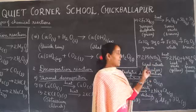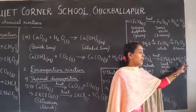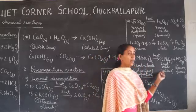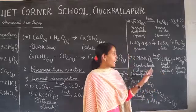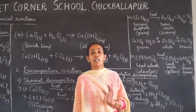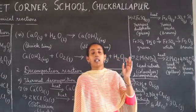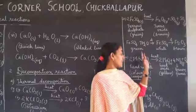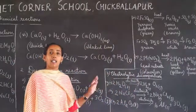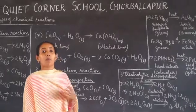The last example: lead nitrate, on heating, decomposes to form lead oxide plus nitrogen dioxide plus oxygen. Lead nitrate is colourless; when heated, it decomposes to form lead oxide which is yellow in colour, along with nitrogen dioxide gas and oxygen gas. This nitrogen dioxide gas is reddish-brown in colour — on the mouth of the test tube, you can see a reddish-brown coloured gas coming out, which is nitrogen dioxide. So these are examples of thermal decomposition reactions, where decomposition takes place in the presence of heat.